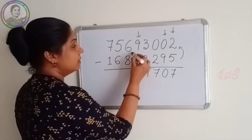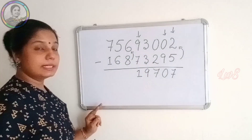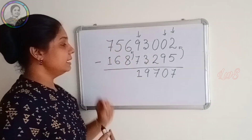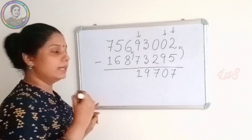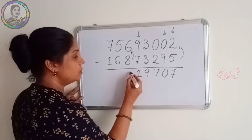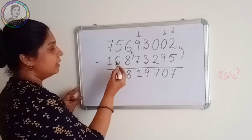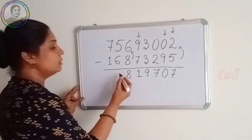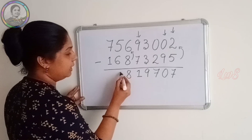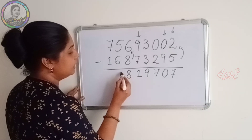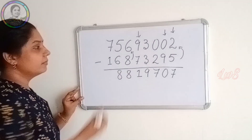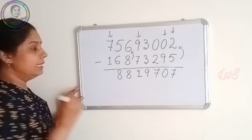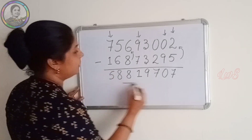Now again we start with reverse subtraction — this is a new start. 8 minus 6 is 2, so we take the complement from 10: 10 minus 2 is 8. Again reverse subtraction: 6 minus 5 is 1, but we take complement from 9 — that is, 9 minus 1 is 8. Now actual subtraction: 7 minus 1 is 6. But we write 6 minus 1, which is 5.